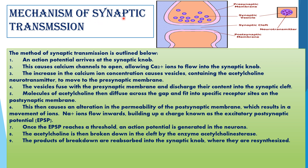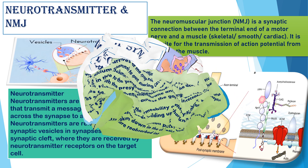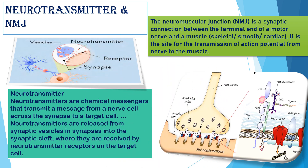Please remember the spelling of acetylcholinesterase and learn it properly. Step 8/9: The products of breakdown are reabsorbed into the synaptic knob where they are re-synthesized. These are the 9 steps of synaptic transmission. Neurotransmitters are chemical messengers that transmit a message from a nerve cell across the synapse to a target cell. They are released from synaptic vesicles into the synaptic cleft, where they are received by neurotransmitter receptors on the target cell. In the case of a synapse, the neurotransmitter is generally acetylcholine.